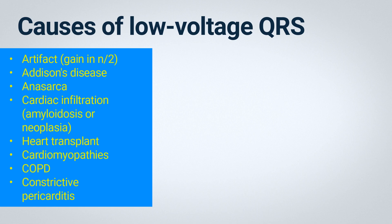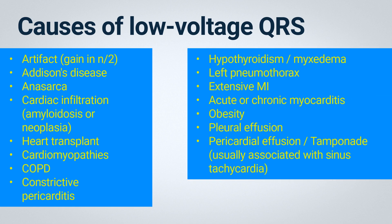Patients with Addison's disease may also present with low-voltage QRS. Anasarca increases the distance and impedance between the heart and the electrodes positioned around the thoracic cage. Patients with infiltrative cardiac diseases, such as amyloidosis or neoplasia. Heart transplant recipients. Patients with cardiomyopathies or chronic obstructive pulmonary disease. Those with constrictive pericarditis or hypothyroidism — in these cases, sinus bradycardia is usually also associated. Patients with left pneumothorax, resulting in a reduction of the amplitude of electrocardiographic signals in the left-sided leads. Patients with extensive anterior myocardial infarction, which leads to a reduction in muscle mass and consequently the generation of the electrocardiographic impulse.